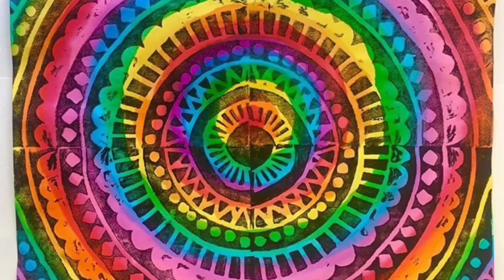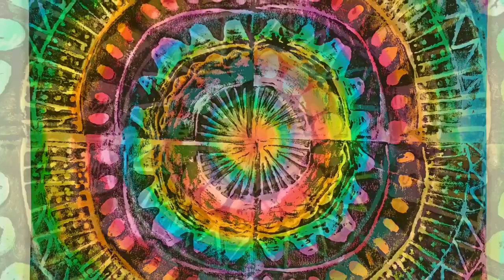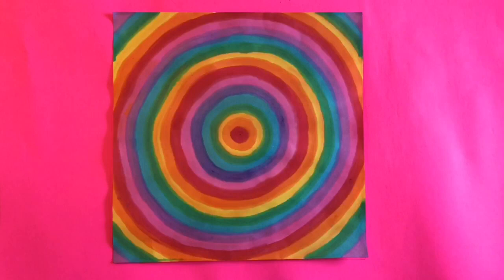Let's get started. The first thing we're going to do is paint a radial rainbow design that we're going to print onto later, but before we do that, let's talk about what a radial design is.